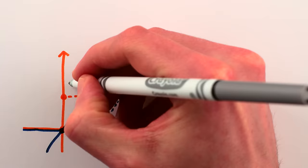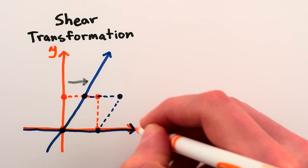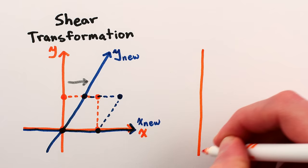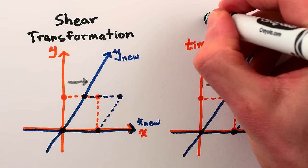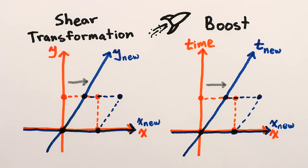This kind of sliding change of perspective is normally called a shear transformation. But that's when both dimensions are space dimensions. Since one of our dimensions is time, a shear transformation represents a change in the velocities of things. So in physics, it's called a boost, as in rocket boosters boosting you to a higher speed.